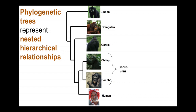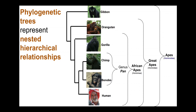In this particular tree, we have a clade of the genus Pan, and then other groups that Pan is nested within. The genus Pan is nested within African apes. African apes include gorillas. They are nested with humans within the great apes. The great apes are nested within apes. Apes are nested within primates. Primates are mammals. Mammals are eukaryotes and so forth. We can continue to represent these hierarchical relationships.